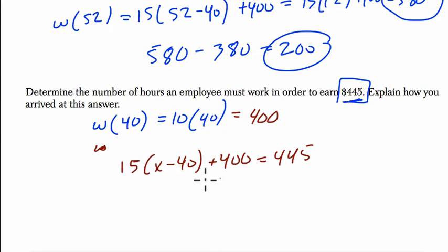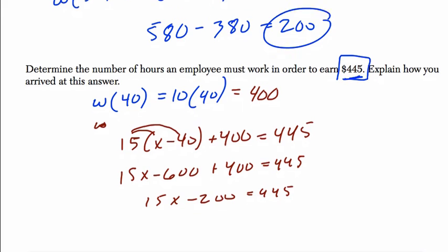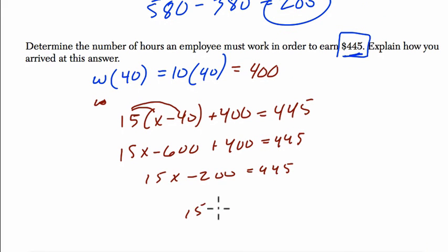So if we solve for X in this equation, we get 15X. We're going to multiply 15 by X and 15 times negative 40. And 15 times 40 is 600, minus 600, right? Plus 400 equals 445. And negative 600 plus 400 is minus 200. So we get this, equals 445.